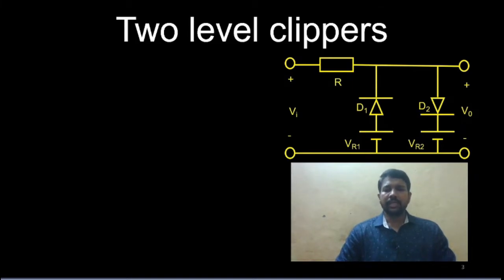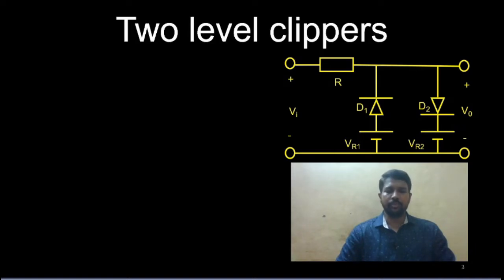Anything below vr1 is going to be clipped off, anything above vr2 is going to be clipped off. Only the portion which is in between these two reference levels is selected as the output.